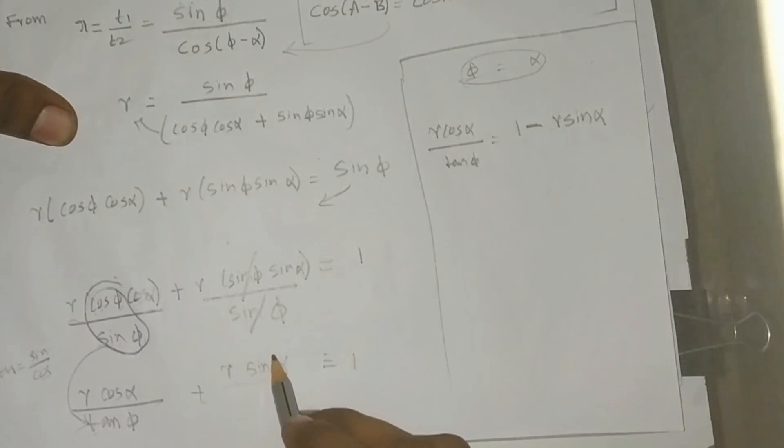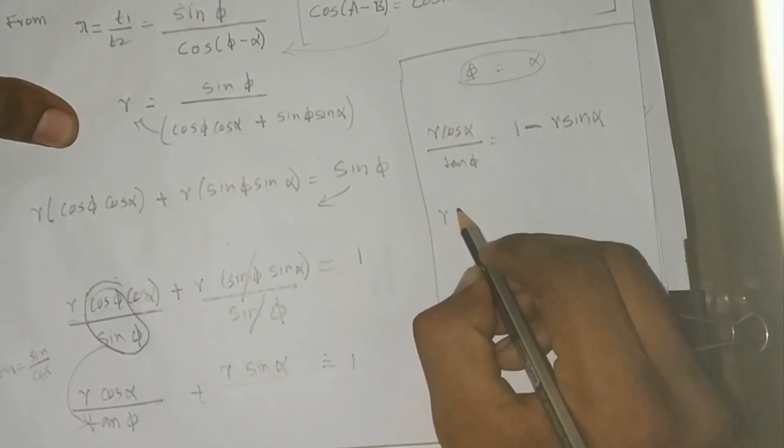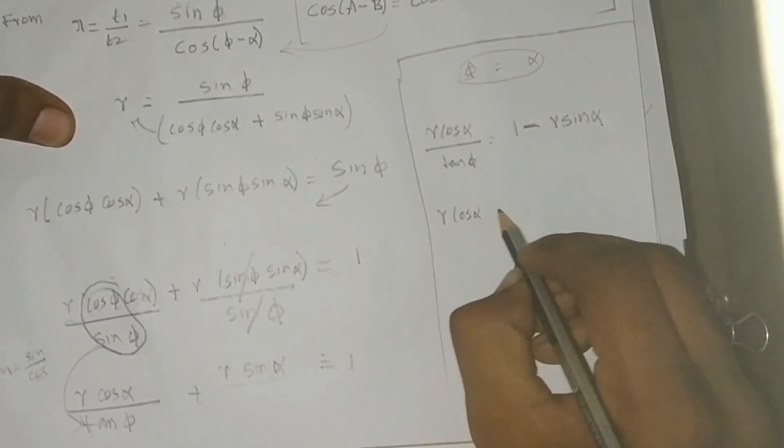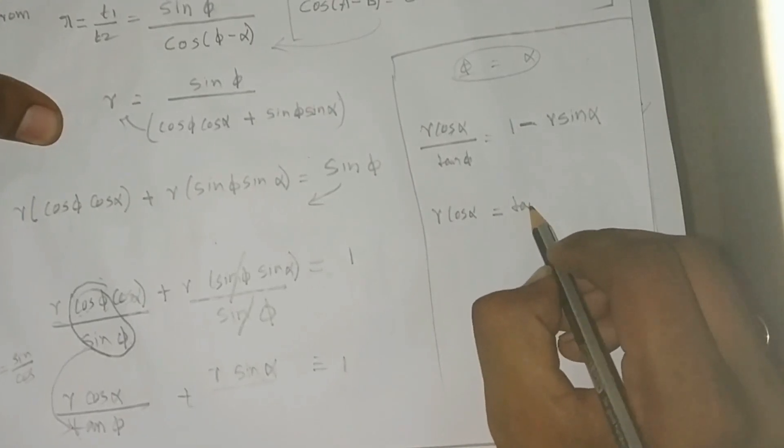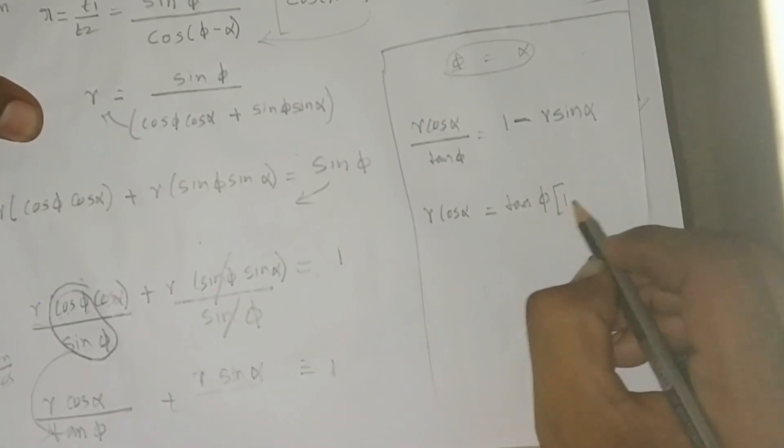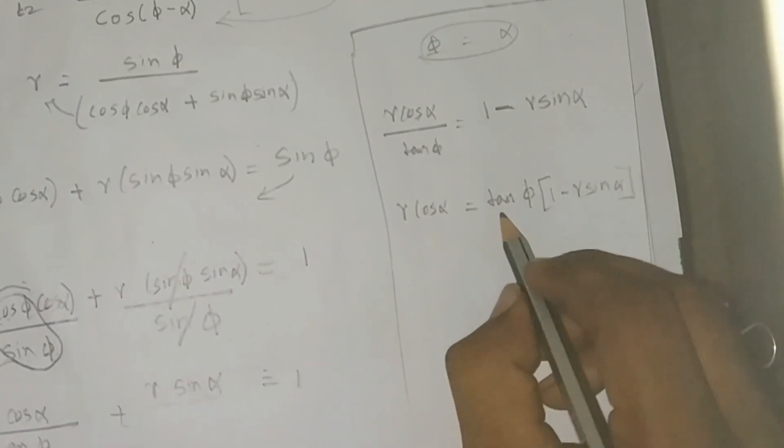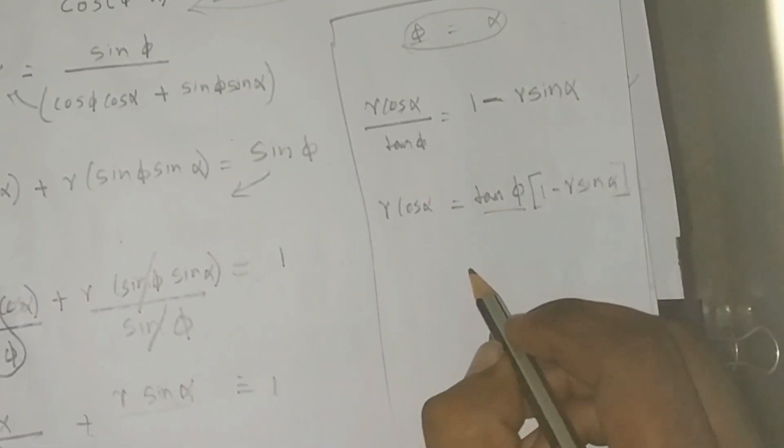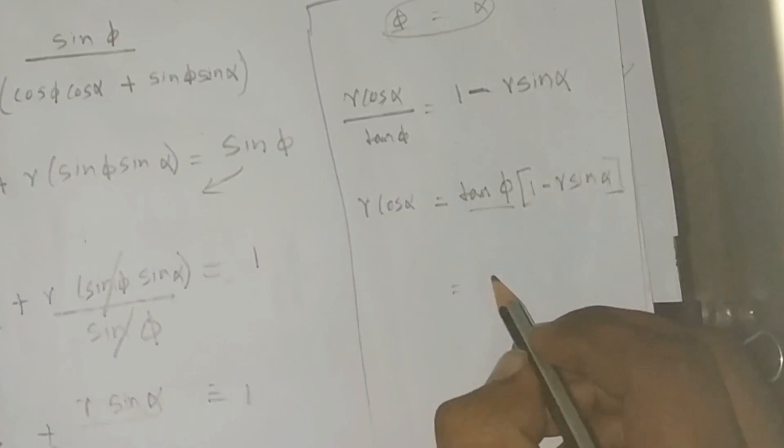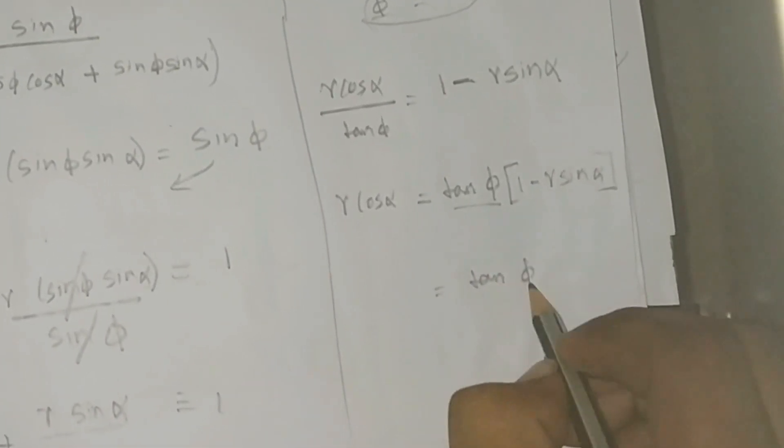I move this to the right side. r cos α = tan φ (1 - r sin α). I want φ, so tan φ alone on one side.